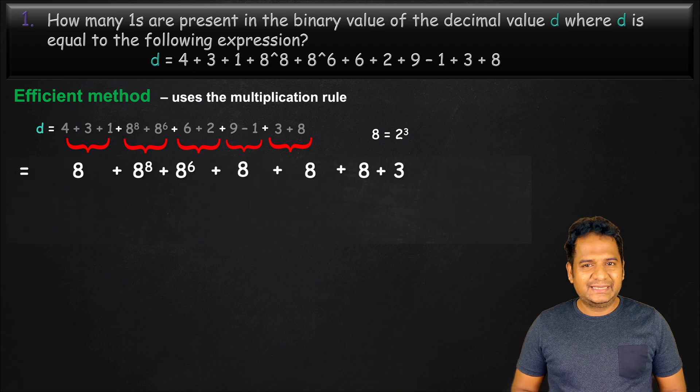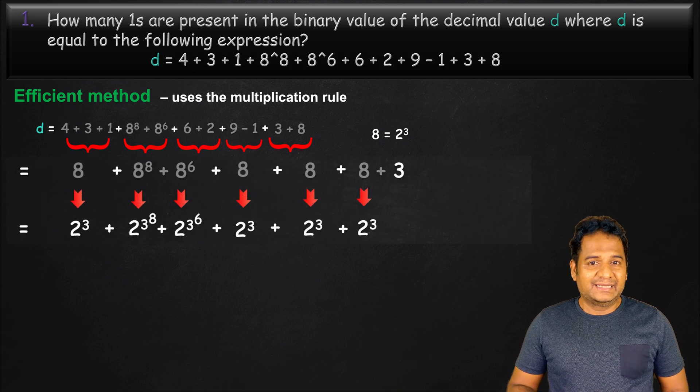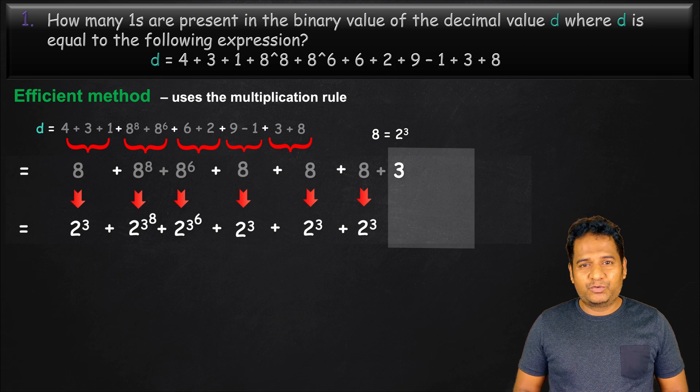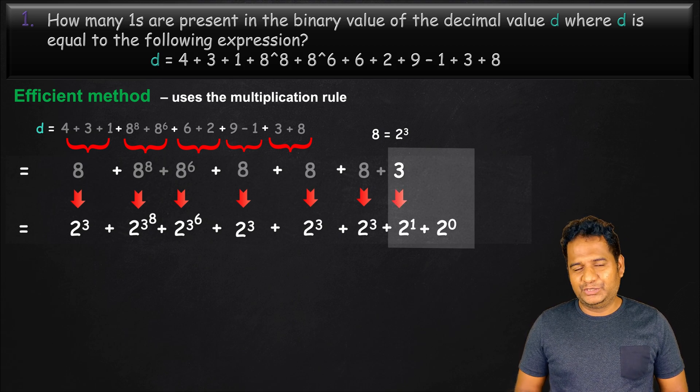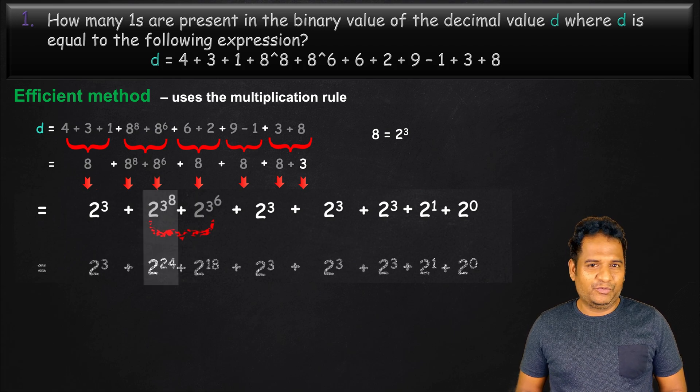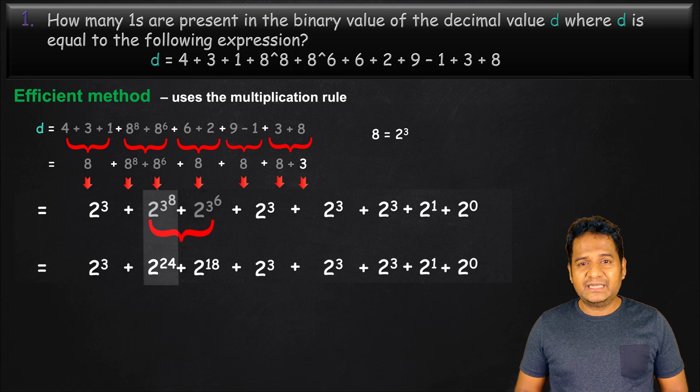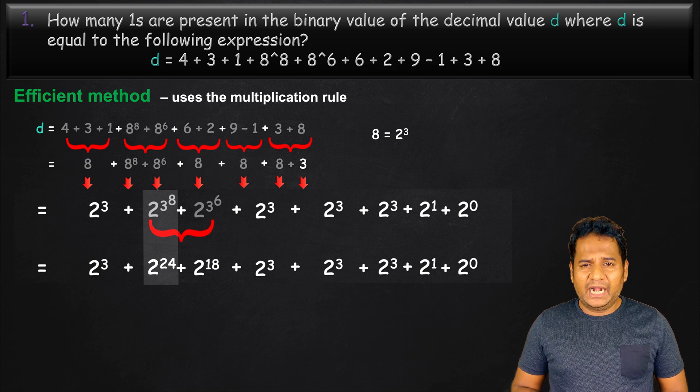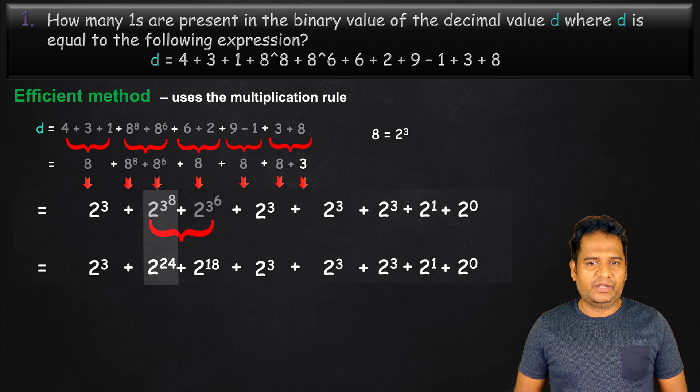Let's replace each 8 with 2 power 3. The 3 can be written as a sum of 2 power 1 and 2 power 0. The 2 power 3 power 8 is nothing but 2 power 24. This is because we can find the product of both powers, which are 3 and 8, and put it as a single power, which is 24.